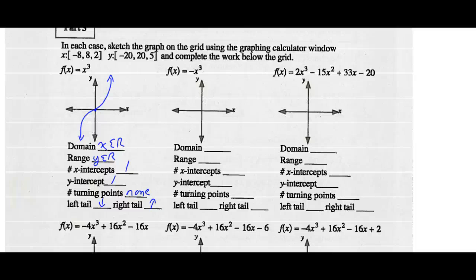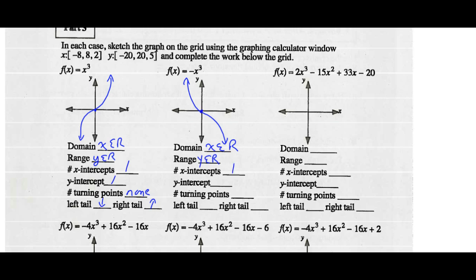For f(x) = −x³, the graph is reflected. Again, domain is x is any real number and range is y is any real number. There is one x-intercept and one y-intercept, both at the origin. There is no turning point — there is a point of inflection. Now the left tail goes up while the right tail goes down, as expected with a negative cubic function.